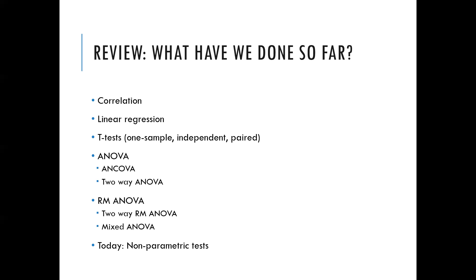We talked about linear regression. Simple linear regression is the same thing as a Pearson's correlation. That's when you have a continuous outcome and a continuous predictor — that's when it would be equivalent to a Pearson's correlation. In linear regression, you can also have categorical predictors as well.